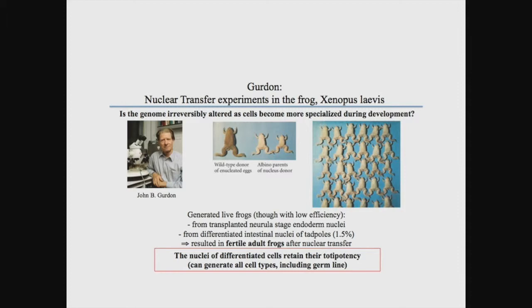What is interesting is that the nuclei were taken from fully differentiated cells — intestinal epithelial cells, cardiac cells, and skin cells — and this resulted in fertile adult frogs after nuclear transfer. Therefore, the conclusion was that the nuclei of differentiated cells retain their totipotency: they can generate all cell types including the germline, because these animals were fertile, exactly like a nucleus resulting from the natural fusion of the two gametes.